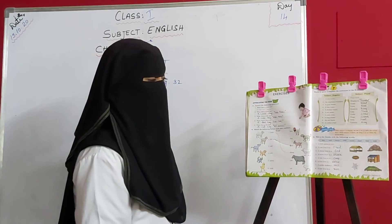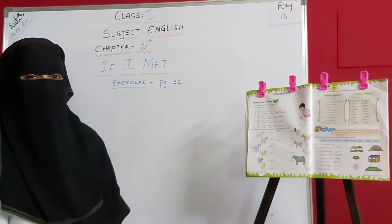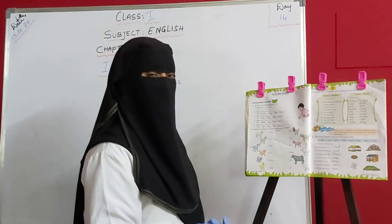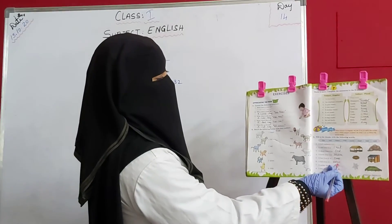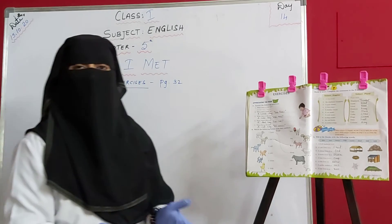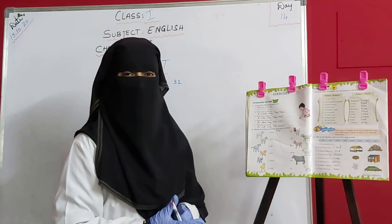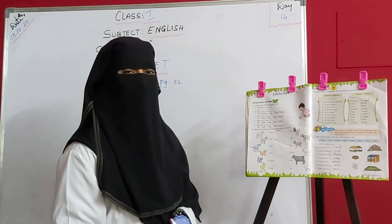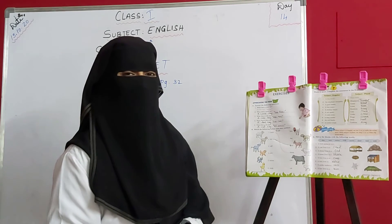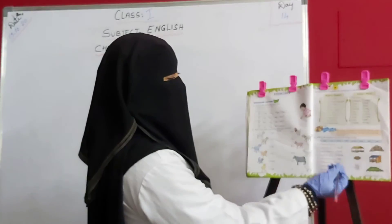A fish lives in water, W-A-T-E-R. Next, a spider makes a web. Spider is makdi — it makes a jal, a web. We have seen it in our houses too. When our houses are not clean, we can see the spider's home. It is called a web, W-E-B.